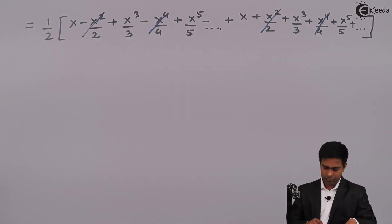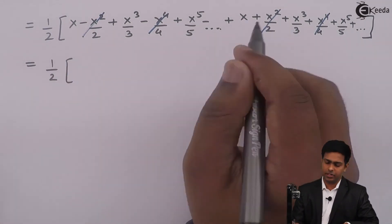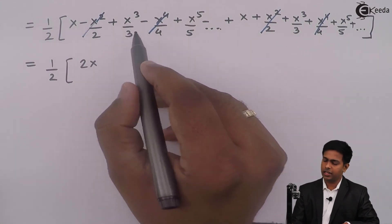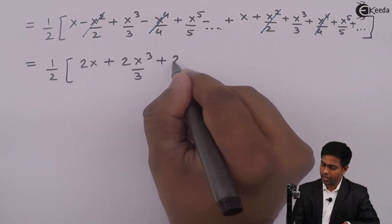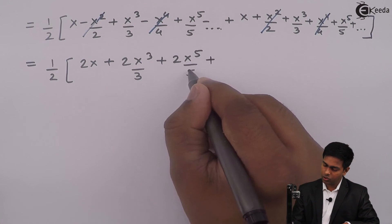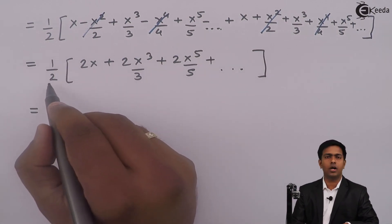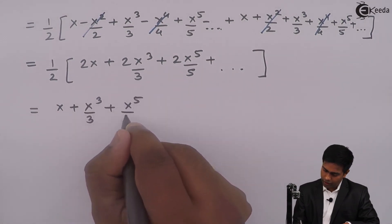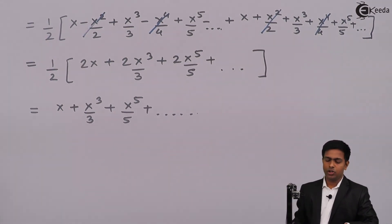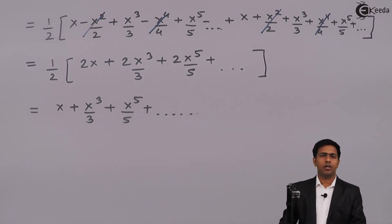Adding the remaining terms gives (1/2) times: 2x + 2x³/3 + 2x⁵/5 + and so on. Taking out the factor of 2, it cancels with the (1/2) outside, giving us the final expansion: tanh⁻¹x = x + x³/3 + x⁵/5 + and so on. This is the expansion of hyperbolic tan inverse x obtained using the Maclaurin series of log(1+x) and log(1−x).